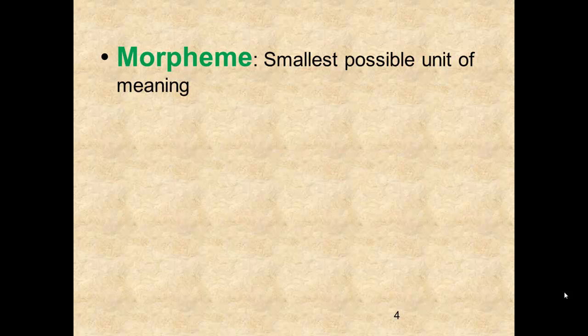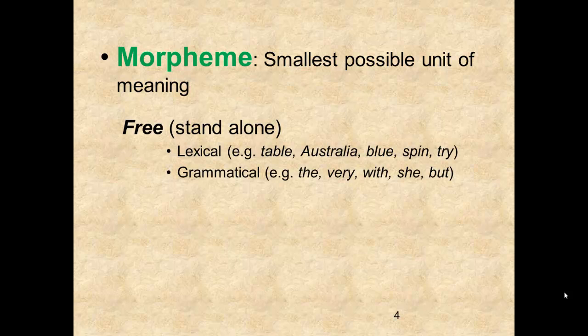For a more systematic approach to our understanding of morphemes, we can easily categorize them as either free or bound. Free morphemes are those that can stand alone in a sentence. "Chair," "giraffe," and "Schenectady" are all examples of free, or standalone, morphemes.